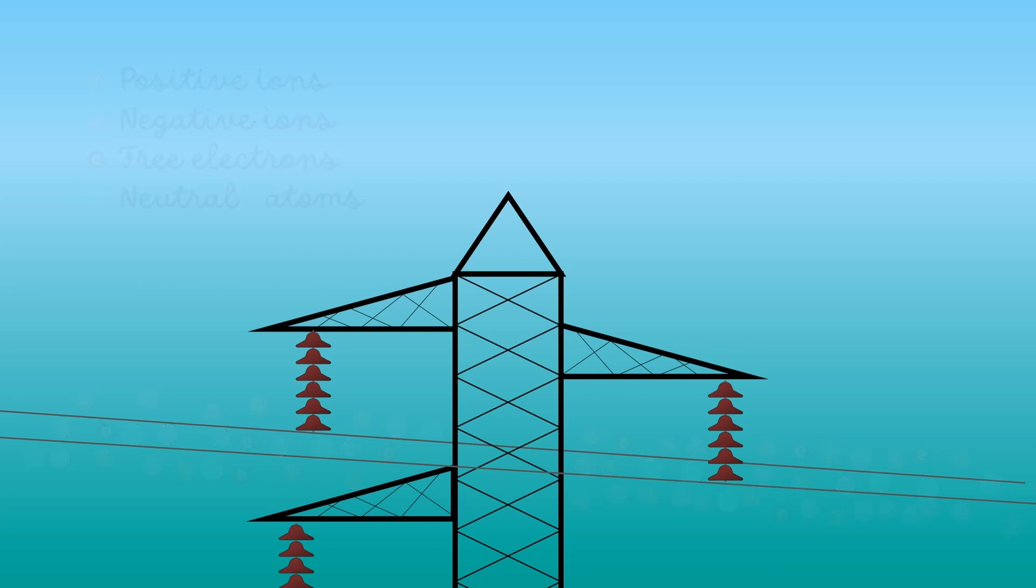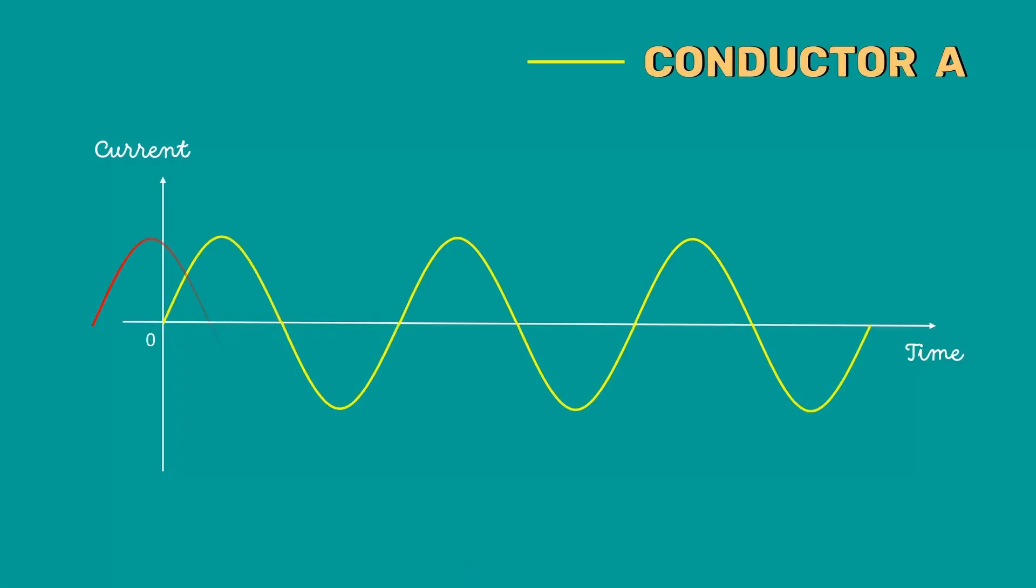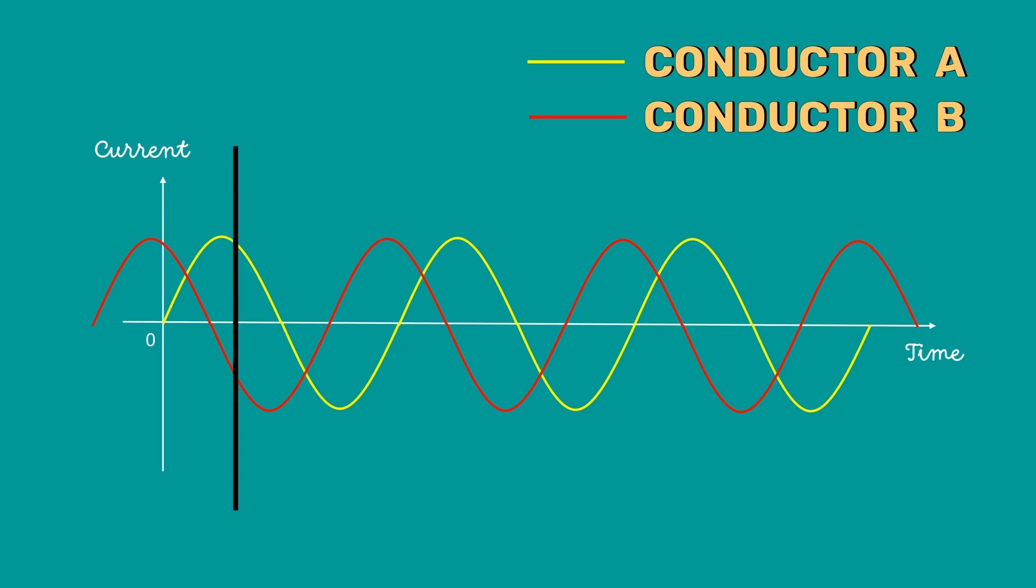Let me explain the corona effect using these two conductors. Since they have 120 degree phase shift, the current waveforms of these two conductors will look similar to this. At this point, the current flowing in conductor A is positive and conductor B is negative.